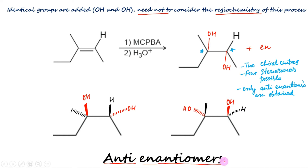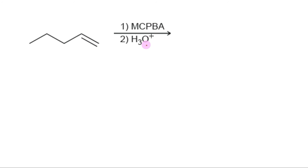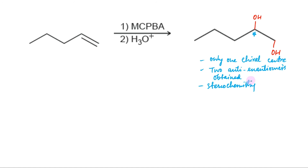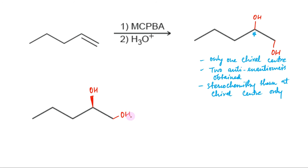The result is the formation of anti-enantiomers. In this second example, the reagents indicate epoxidation followed by acid-catalyzed opening, thus anti-dihydroxylation will be achieved across the carbon-carbon double bond. In doing so, only one new chirality center is formed. It is true that the reaction proceeds through anti-addition of OH and OH. However, with only one chirality center in the product, the preference for anti-addition becomes irrelevant. Both possible enantiomers are formed, but stereochemistry is shown only at the chiral center. Thus OH on this chiral carbon can be shown above or below the plane. The result is the formation of enantiomers.